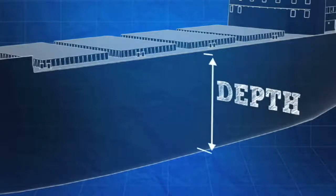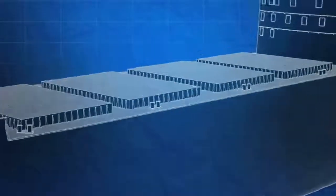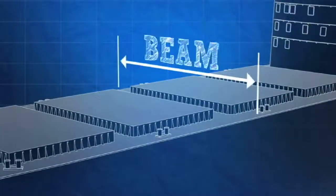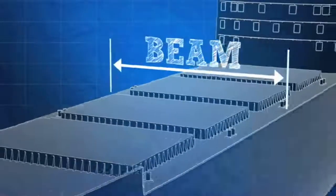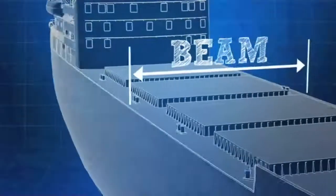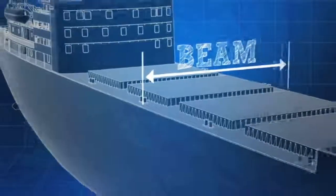Depth is the height of a hull from the highest point of its main deck to its lowest point. In the other direction, a ship's beam or breadth is its width at its widest point.